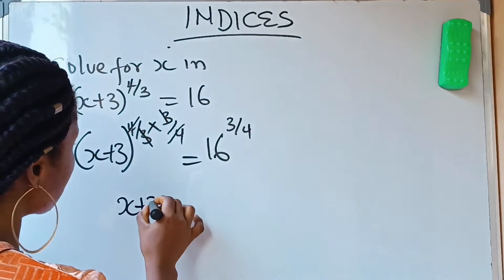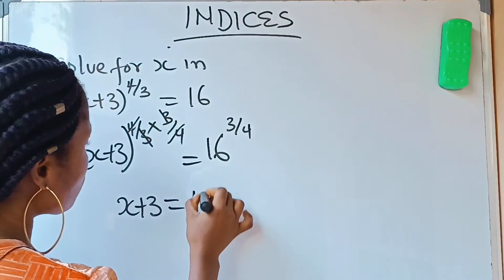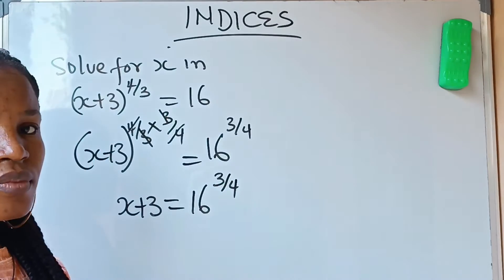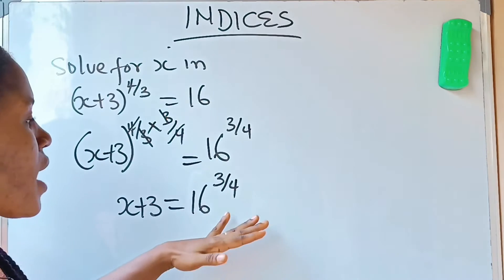So you are going to have x+3 raised to the power of 1 here, which is the same as x+3 equals 16 raised to the power 3/4. Now this is the first step.